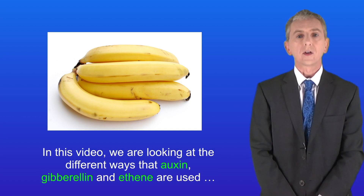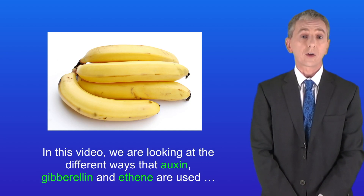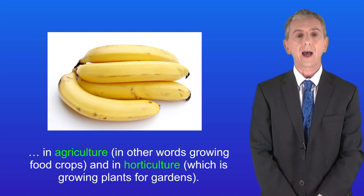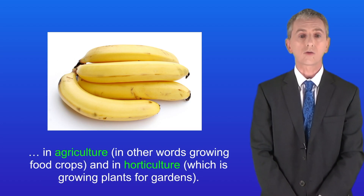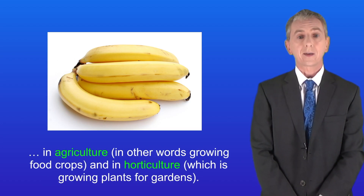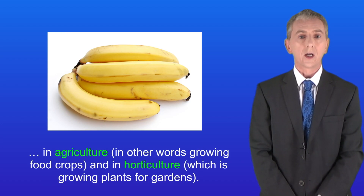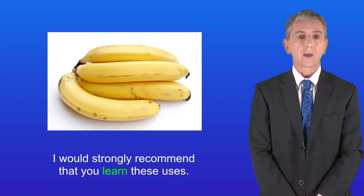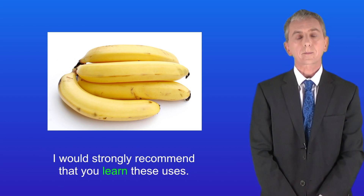In this video we're looking at the different ways that auxin, gibberellin and ethene are used in agriculture — in other words growing food crops — and in horticulture, which is growing plants for gardens. I would strongly recommend that you learn these uses.